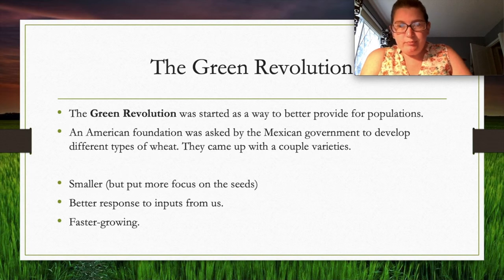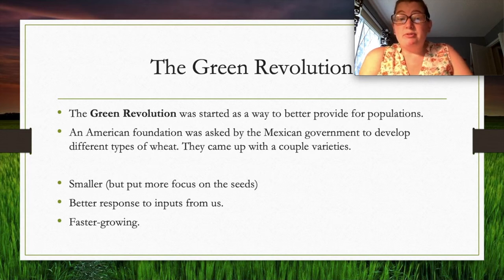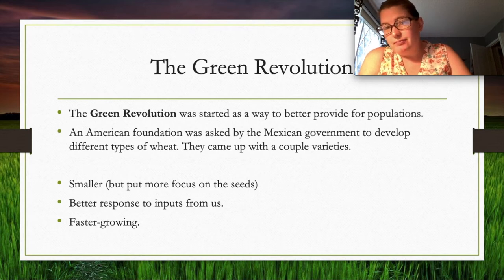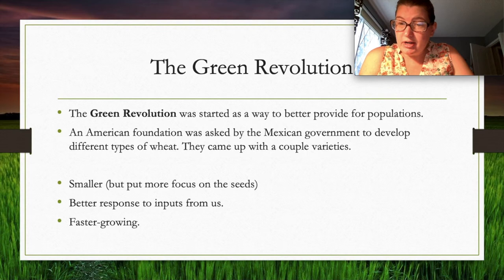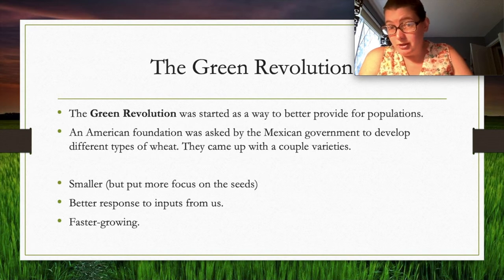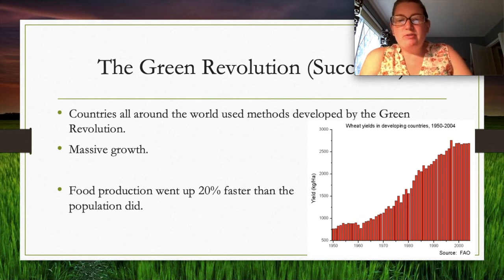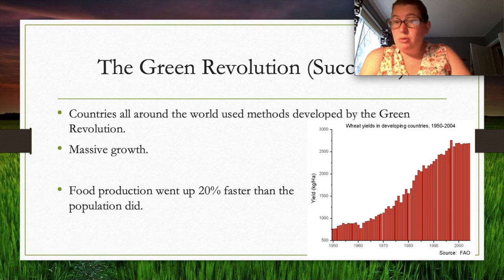The Green Revolution was started to better provide for growing populations. An American foundation was asked by the Mexican government to develop new wheat varieties that could grow more efficiently. They developed varieties that were smaller but more focused on seeds, responded better to inputs, and grew faster. Countries worldwide used these methods to see massive growth in wheat yields — seeds can be modified through crossbreeding.